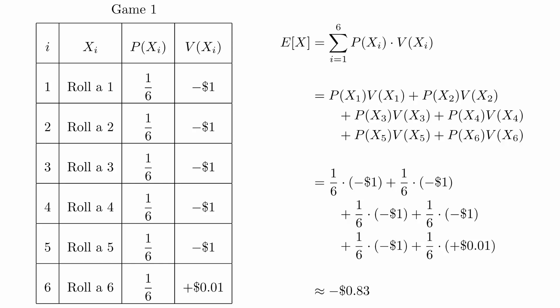How do we interpret this number? It means that on average, you will lose 83 cents every time you play this game. It doesn't mean that you will definitely lose 83 cents every time you play the game. But if you play the game a lot of times, you will find that on average, the amount of money you lose each game is 83 cents.